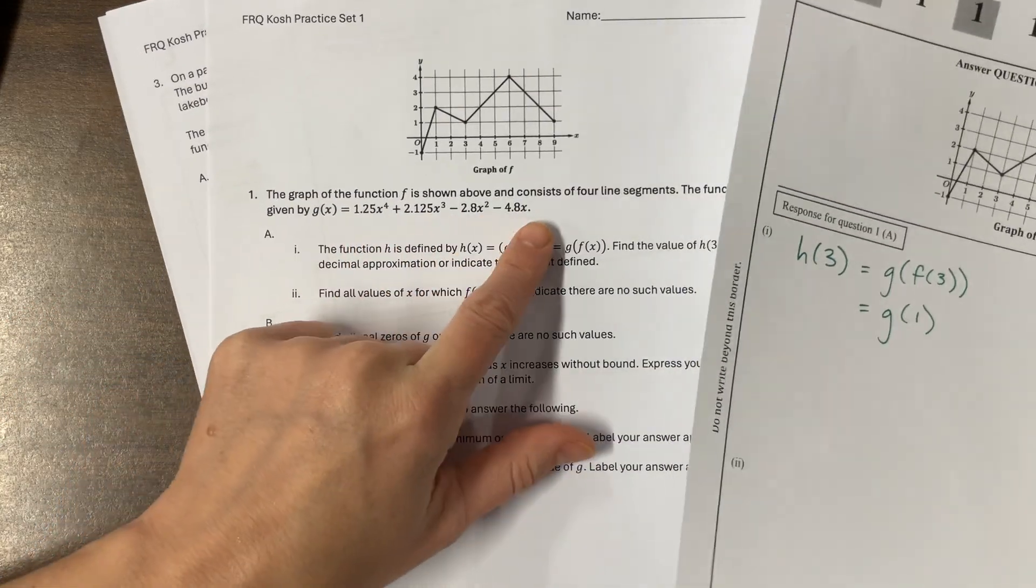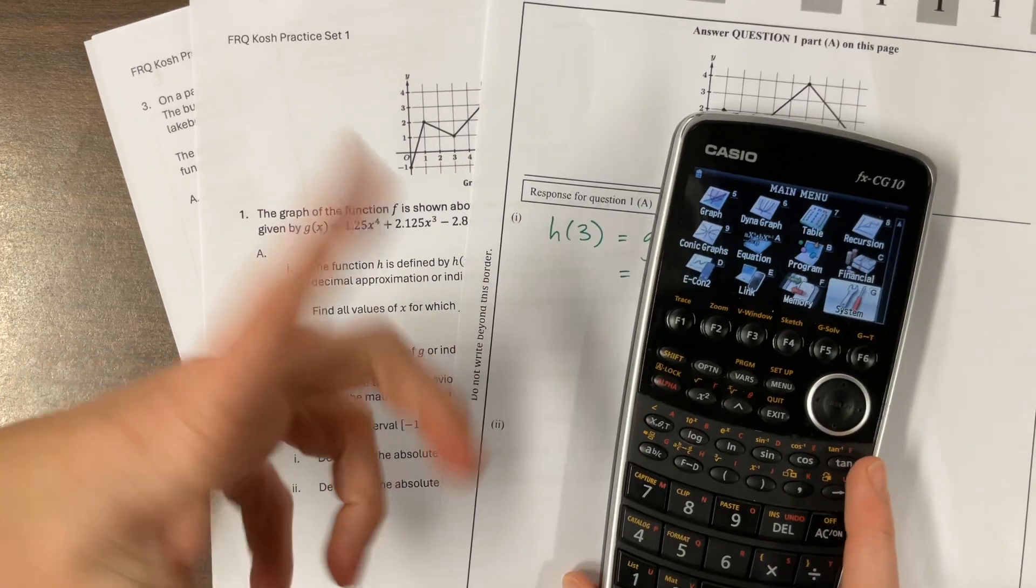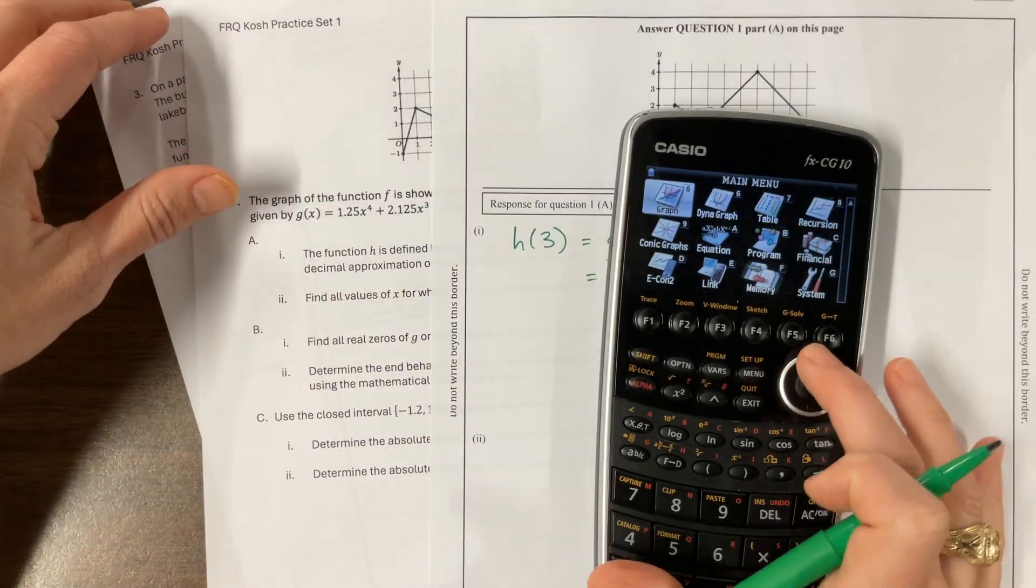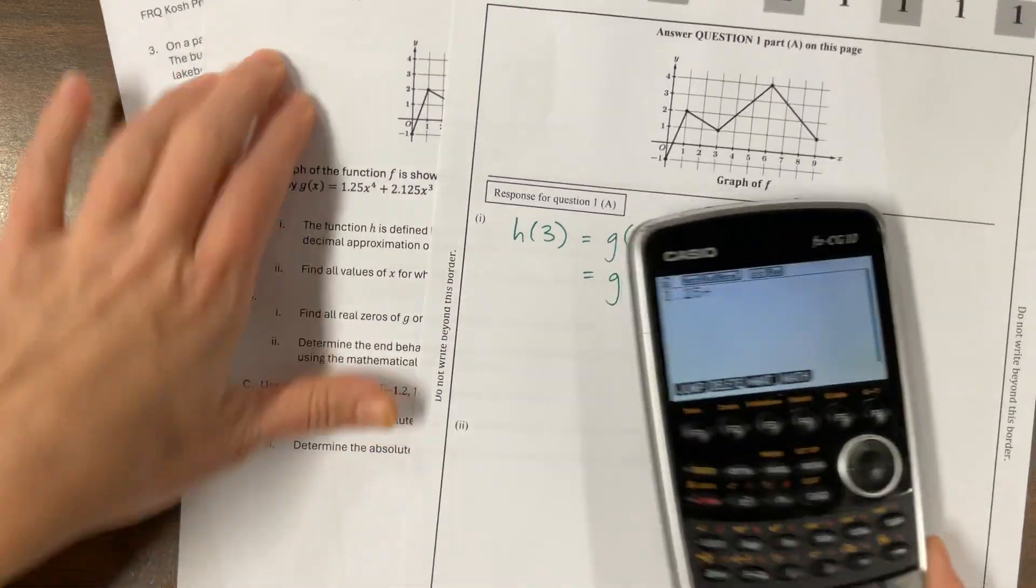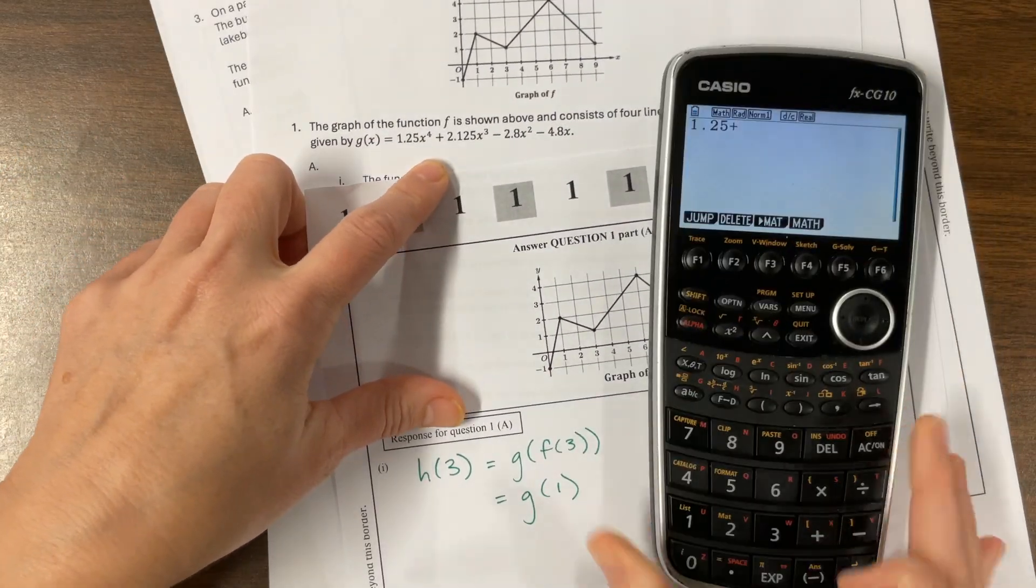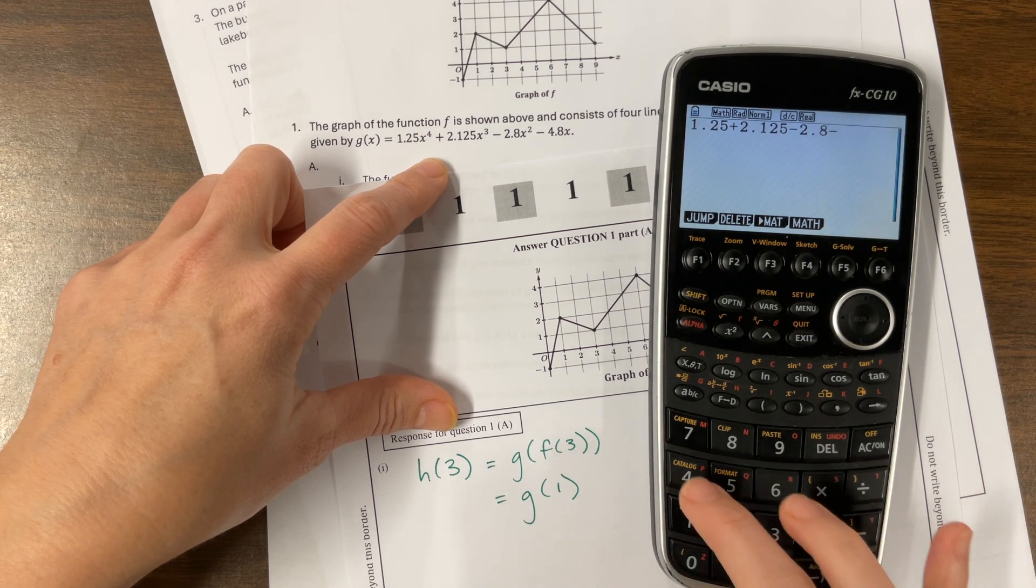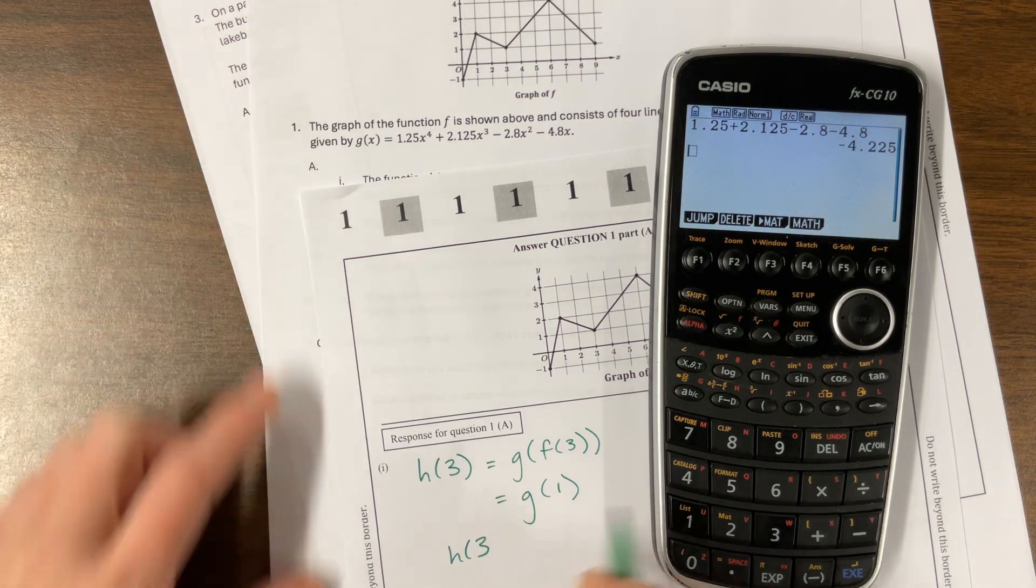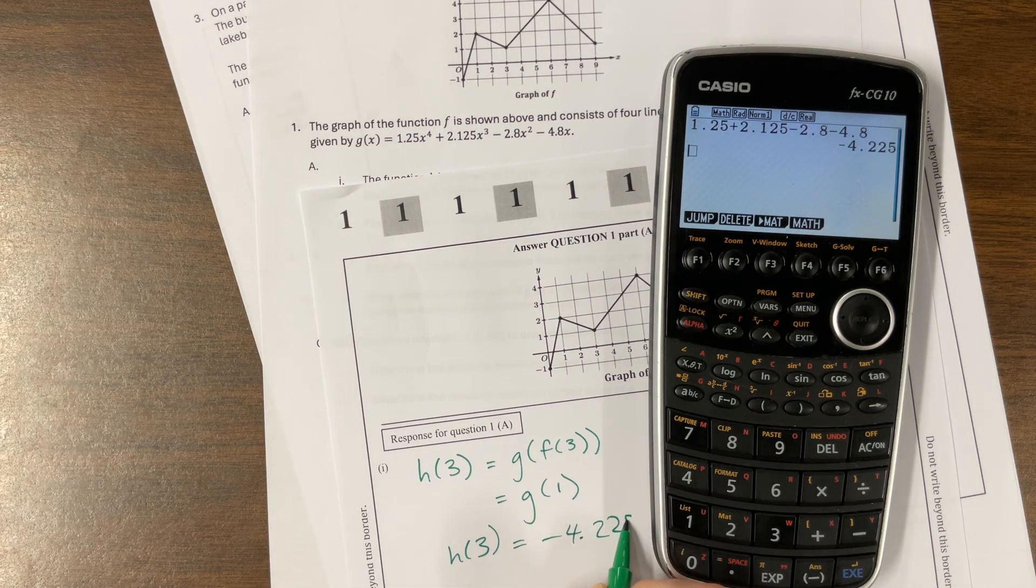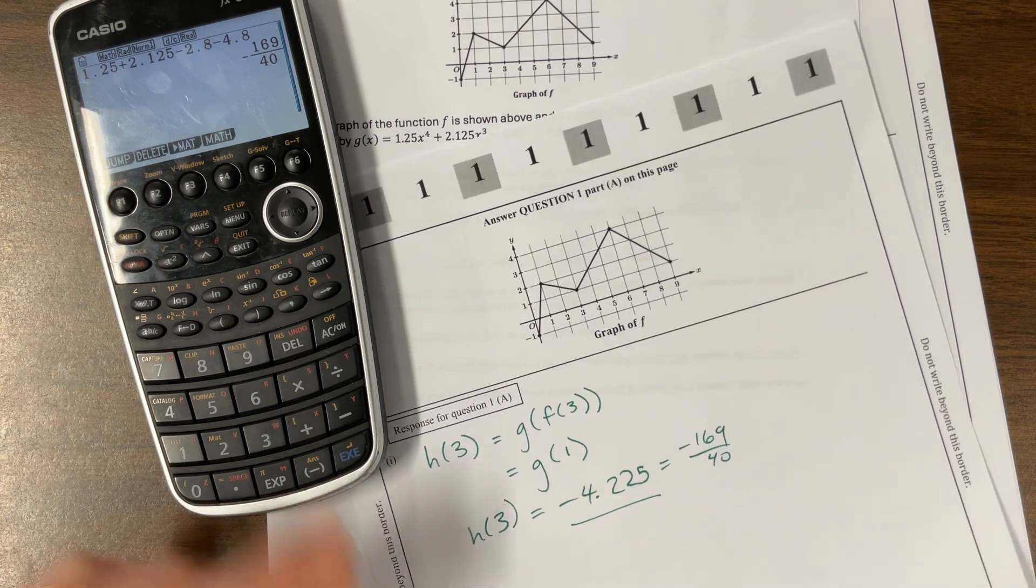So, this would be equal to G of 1, and now my G equation is this big old nasty thing. So, I can either just plug 1 in, which, when I plug in 1 to my equation, 1 to any power is still just 1, so this is, that was convenient for us, but it becomes, so it's 1.25 plus, you can't, I can't see it, much less you can't see it. Okay, can you see it there? Plus 2.125 minus 2.8 minus 4.8. Okay, and so I'm getting the answer that H of 3 is equal to a negative 4.225.